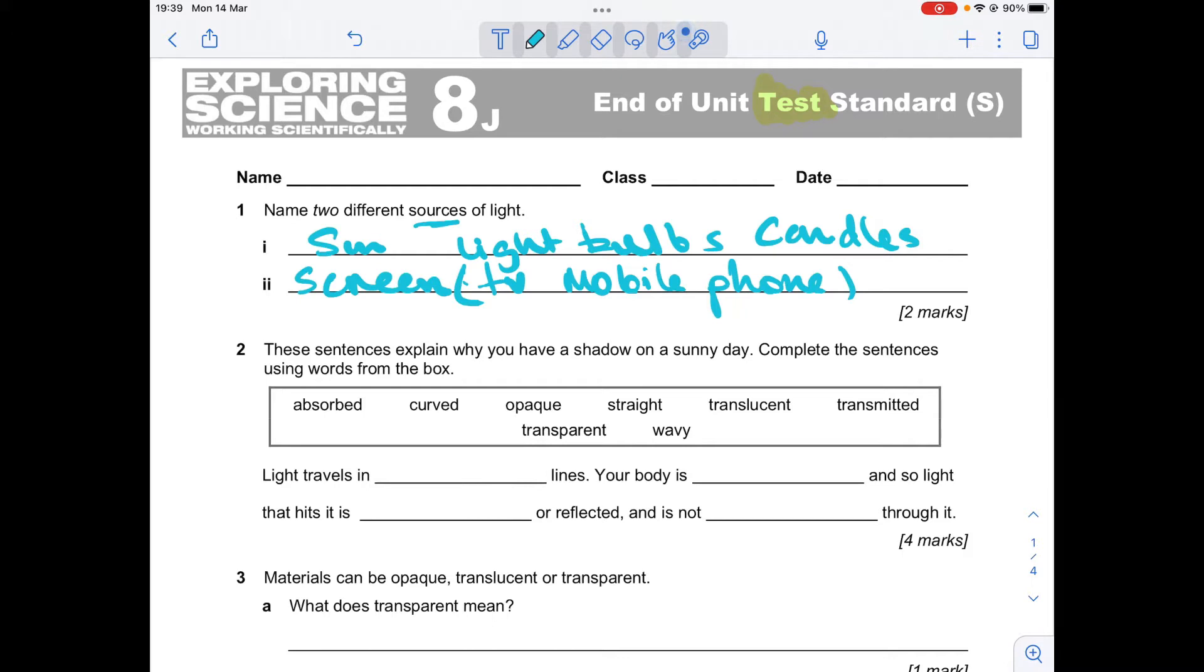These sentences explain why you have a shadow on a sunny day. Complete the sentences using words from the box. So light travels in straight lines.